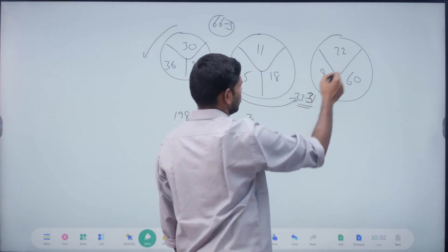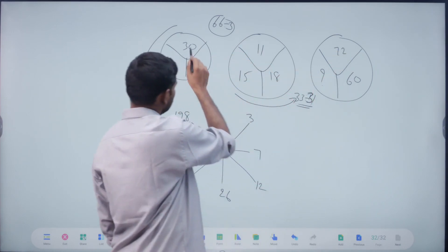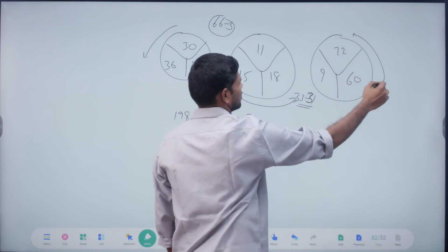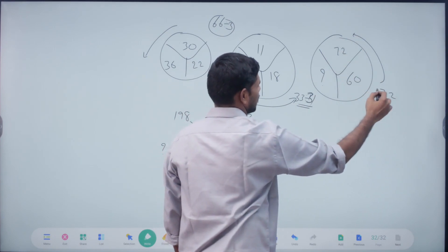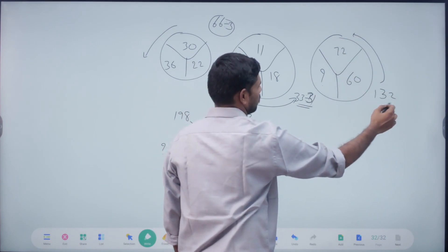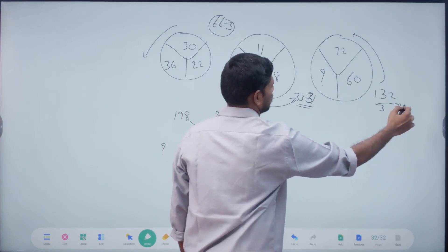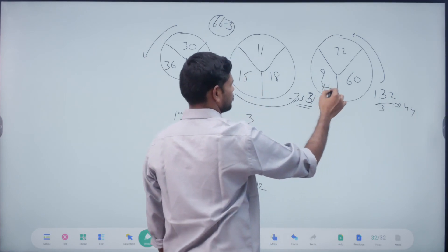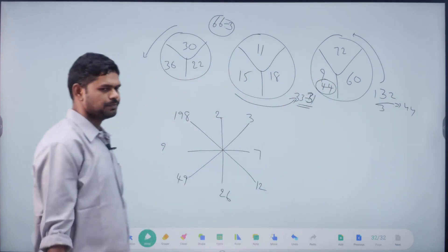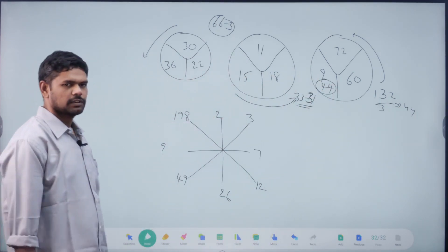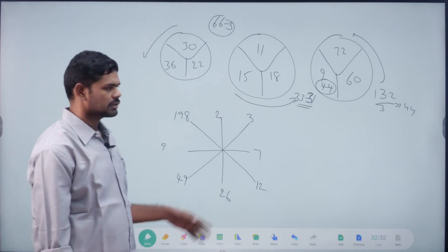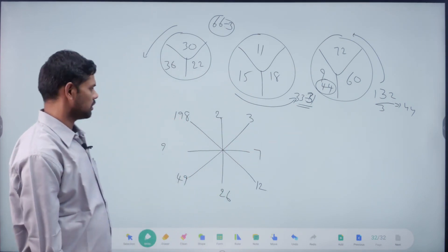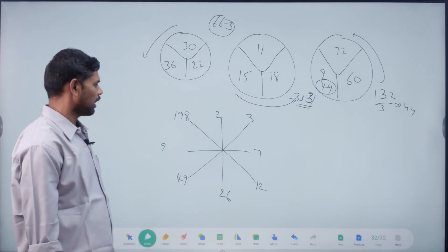Next here. First 2, 3, and then 2. 60 plus 72, what is it? 132. By 3, yes, it is 44. Right, ok. So in this case, right, we can change the possibilities. We can change the possibilities.